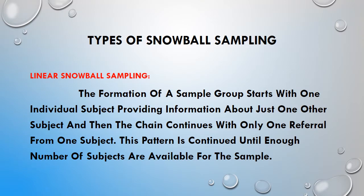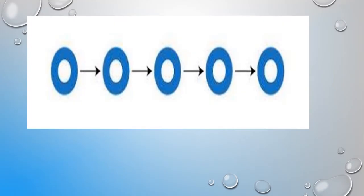Coming to the types of snowball sampling. The first one is linear snowball sampling. In this type, each subject provides information about just one other subject and the chain continues with only one reference. Every single person introduces only one other single person, and this pattern is continued until enough subjects are available for the sample. Each selected sample is asked to provide a reference of only one similar subject, where a linear chain is created until the desired sample size is reached.